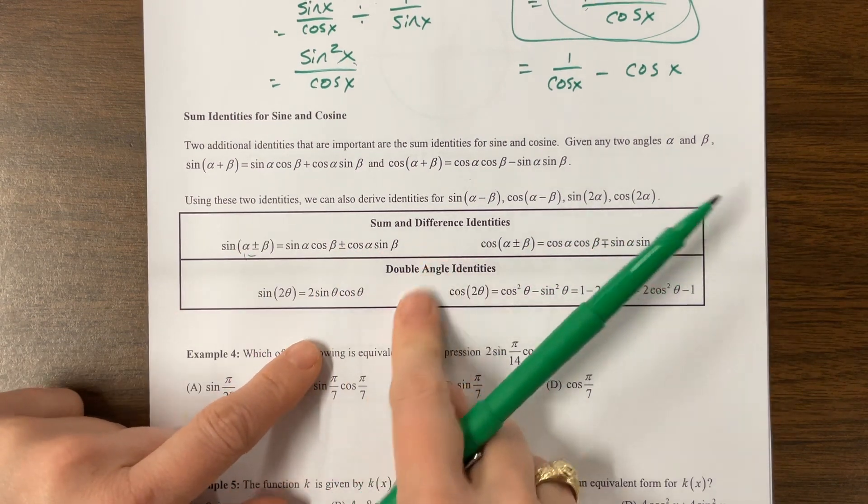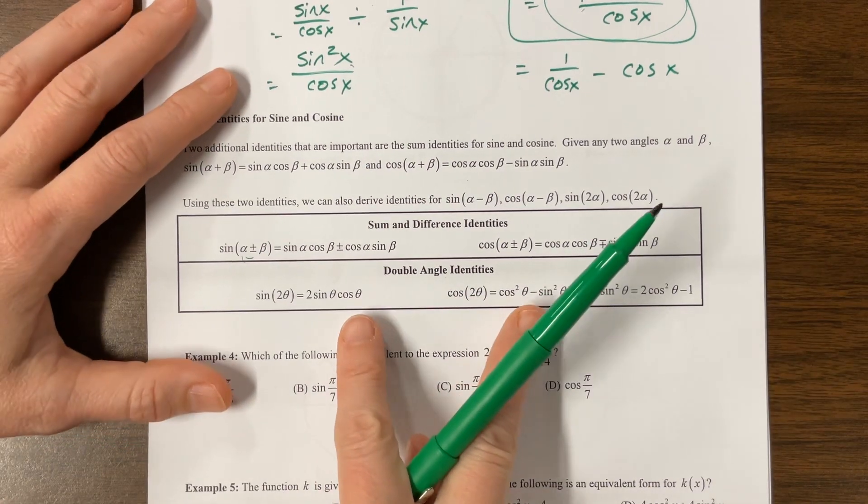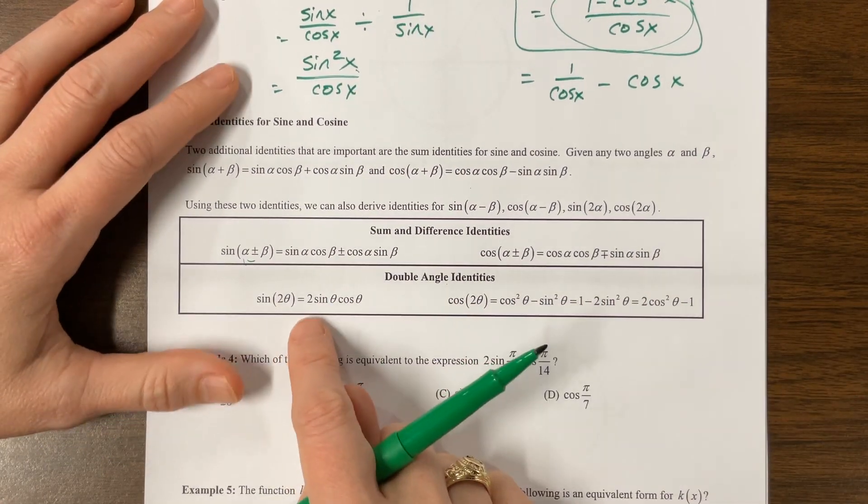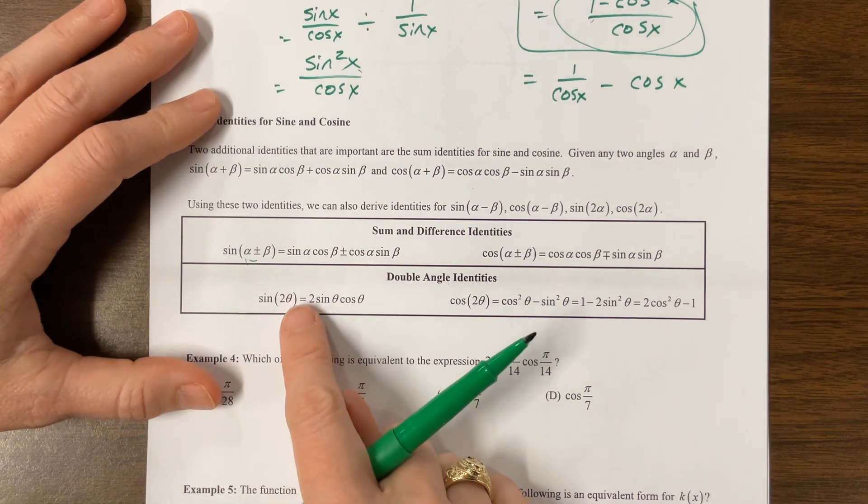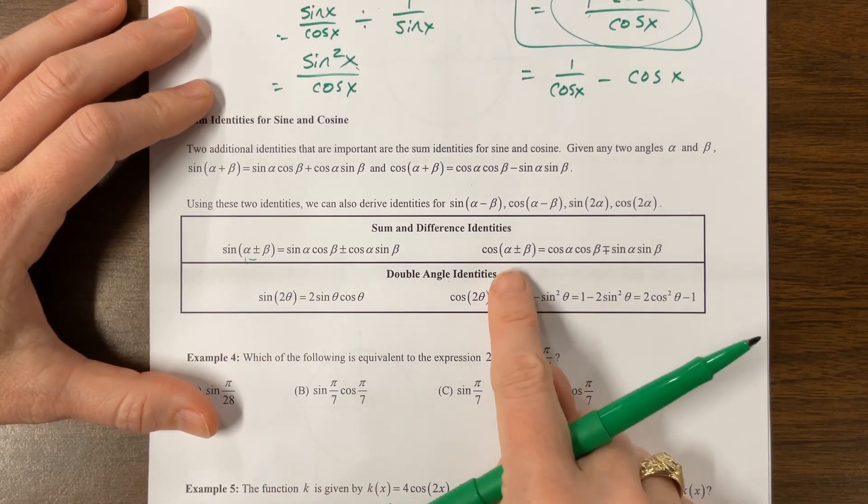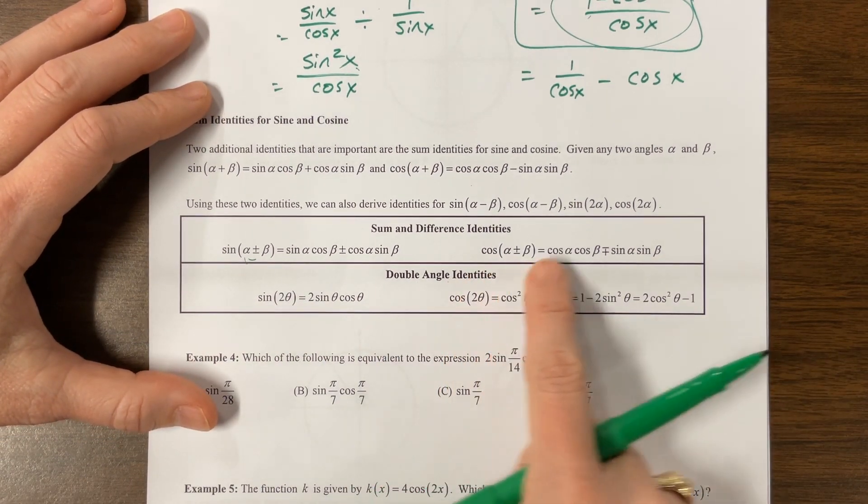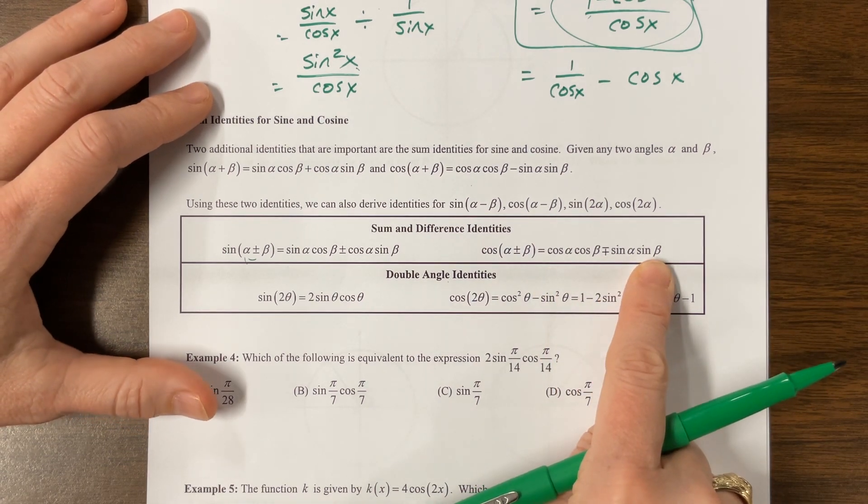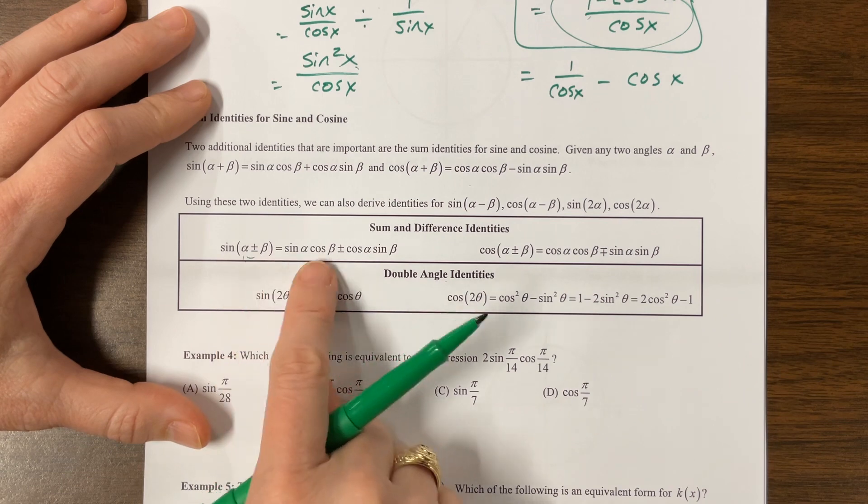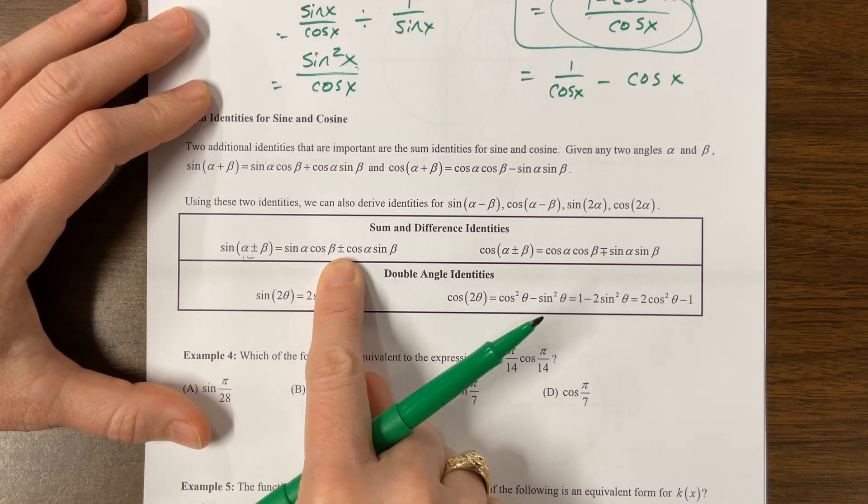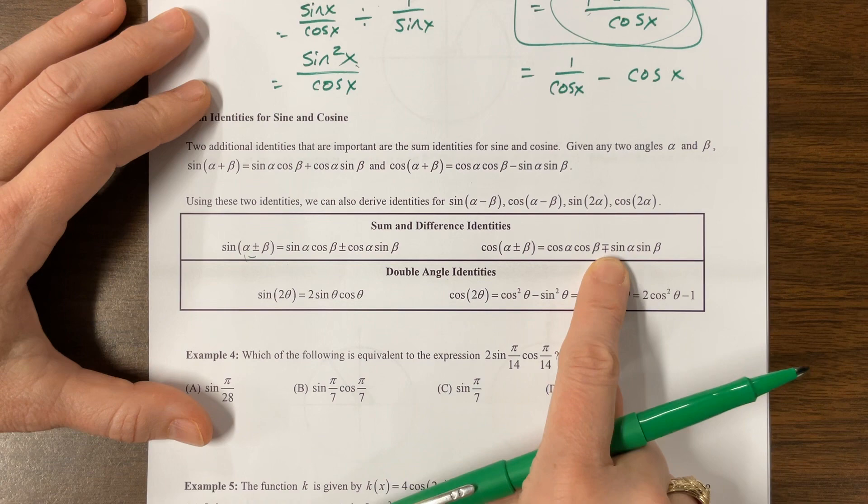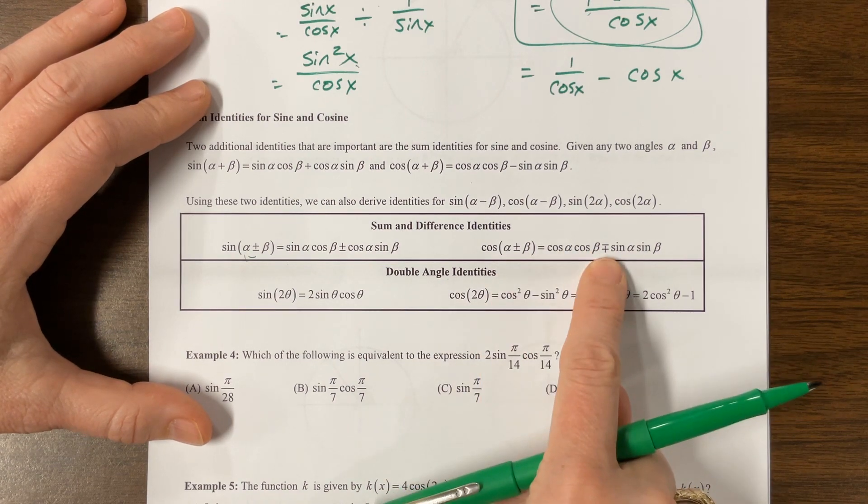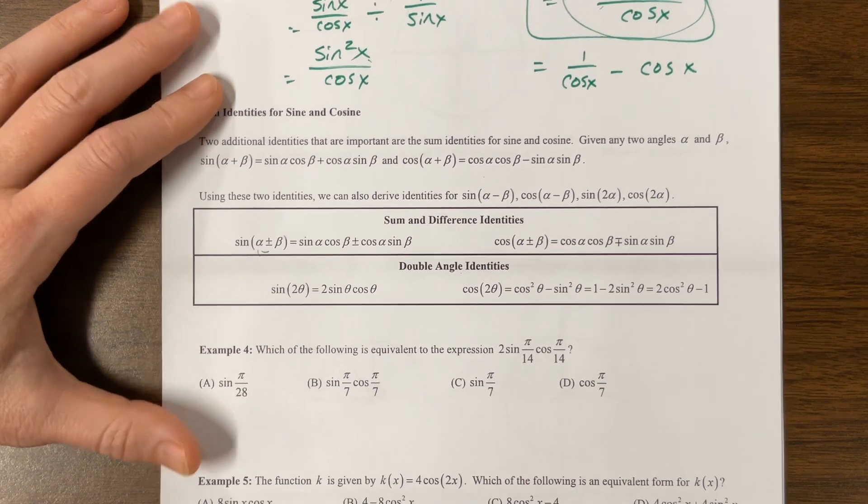AP will not give you these formulas, and I imagine that you will need to know them. I can't imagine that they won't put them on the test. I would be shocked. Okay, cosine of alpha plus beta, it's cosine, cosine, opposite SIGN, sine, sine. That's how I like to remember that one. So the SINE one is sine, cosine, cosine, sine with the same SIGN. The cosine one is cosine, cosine, sine, sine with the opposite SIGN. The plus here corresponds with the minus, the minus with the plus. And then we work out these different identities.